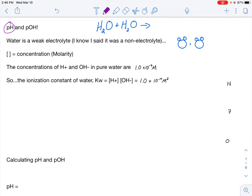To understand it, we first need to realize that water is a weak electrolyte. Now, I know I said it was a non-electrolyte, meaning it doesn't have any ions in the solution, but in reality, it has a few ions in the solution. How many? Well, we can actually calculate it.